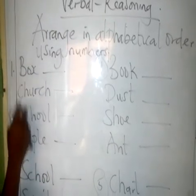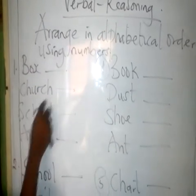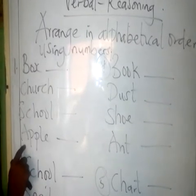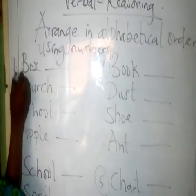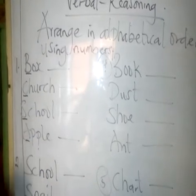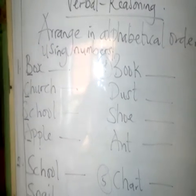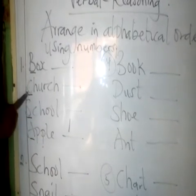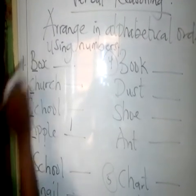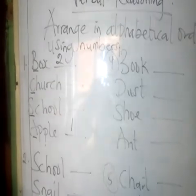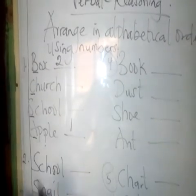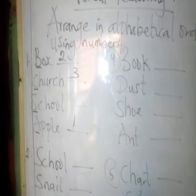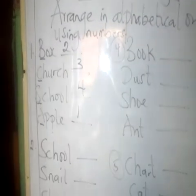Here we have B — Box. Here we have C — Church. Here we have S — School. And here we have Apple — A. Now let's take the first alphabet of each word. You know A will come first, so put 1. Then we have B, C, and S remaining. B will come second, put 2. C will come third, put 3. And the last one, S, will come last — put 4.